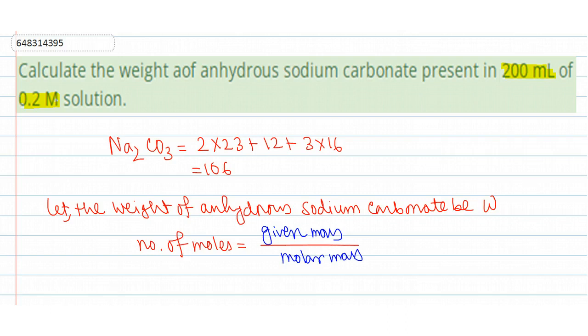The given mass we have assumed to be W, and the molar mass we have calculated as 106. So we can simply write W by 106.